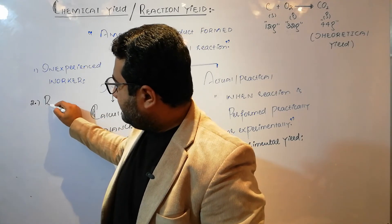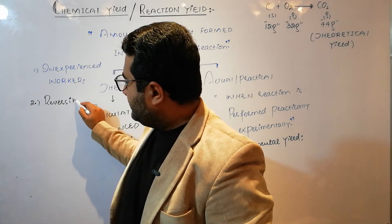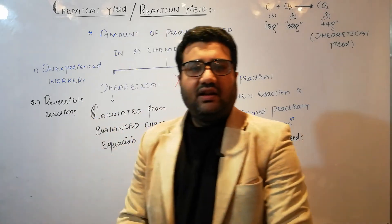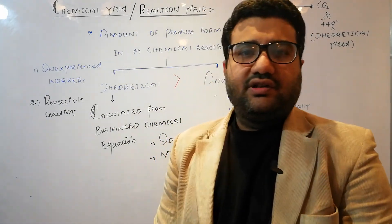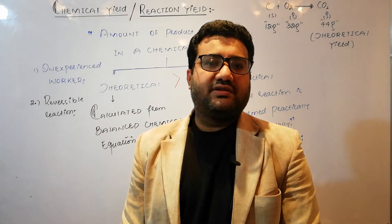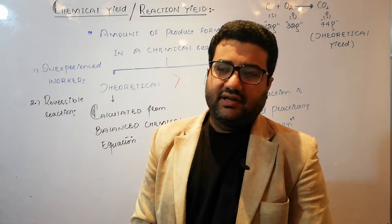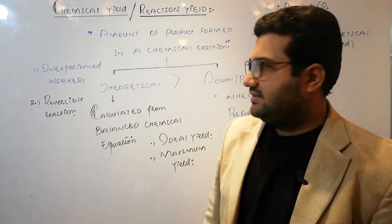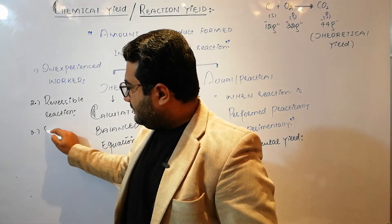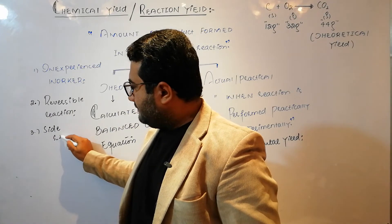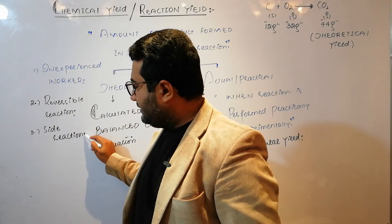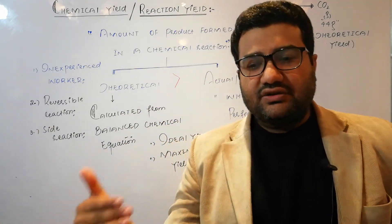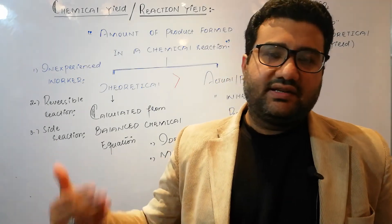The second reason is that sometimes reactions are reversible. In a reversible reaction, the ultimate goal is dynamic equilibrium — all the reactants are never completely converted to products, so you cannot get the maximum quantity of product. Products are again changed back into reactants, which decreases the yield. The third reason is side reactions. Sometimes an unwanted reaction starts alongside the main reaction, consuming some reactants and decreasing your yield.